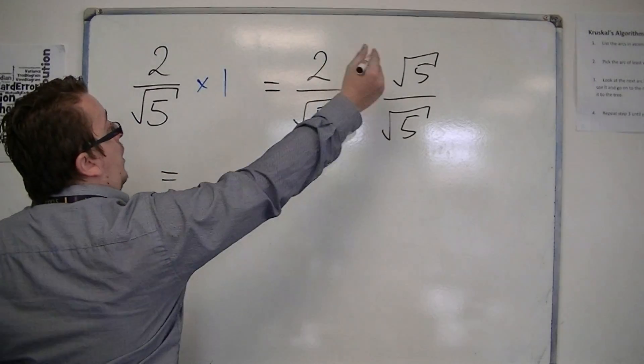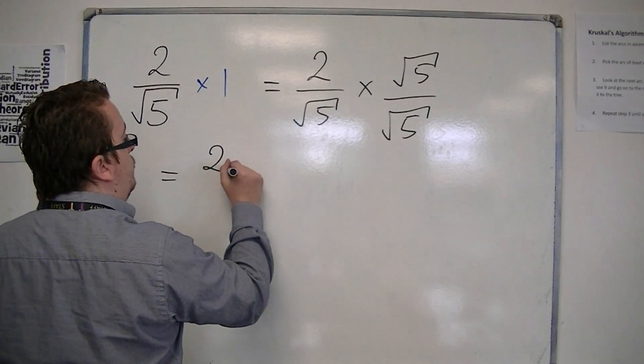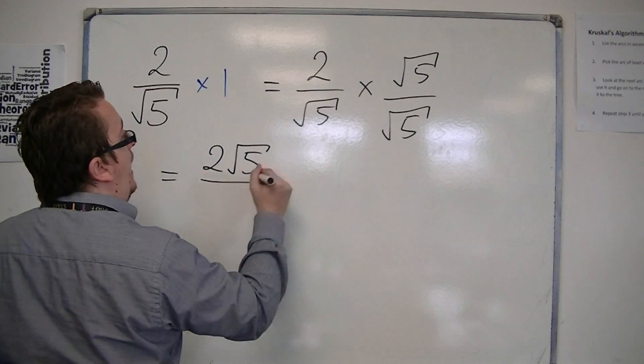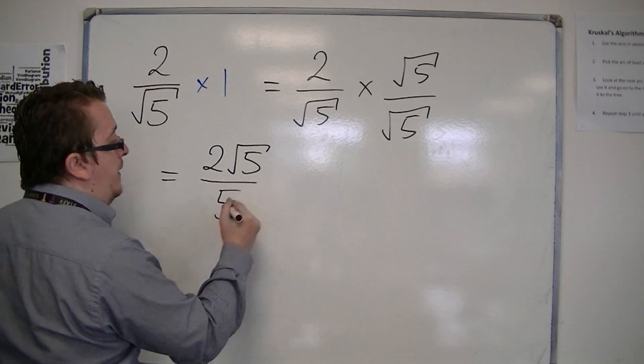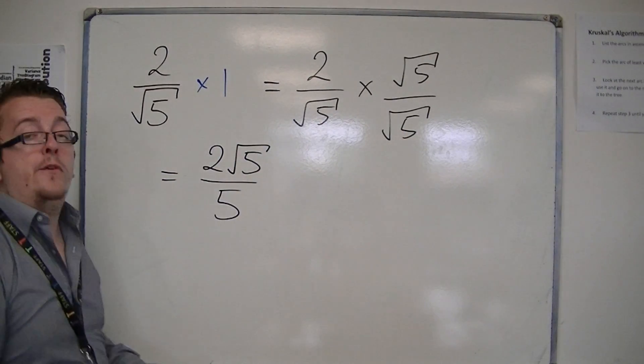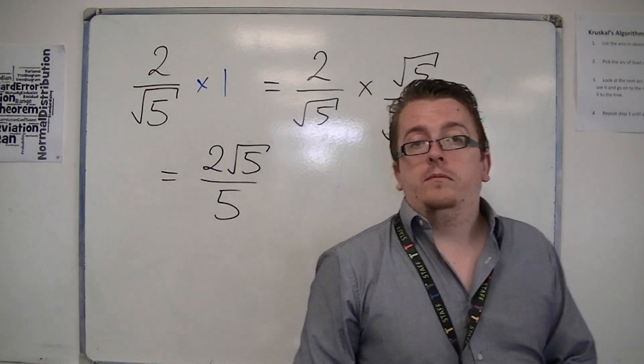So, I get 2 times root 5 is 2 root 5. And root 5 times root 5 is just 5. And so, I have 2 root 5 over 5. And then I'm done.